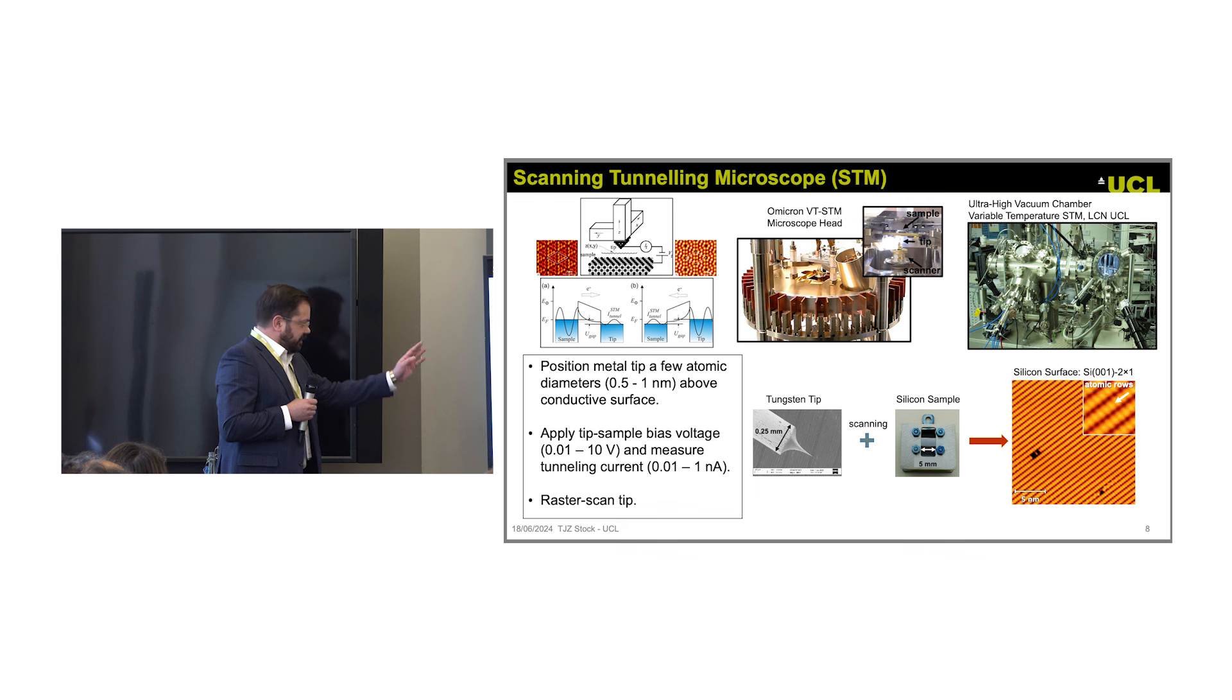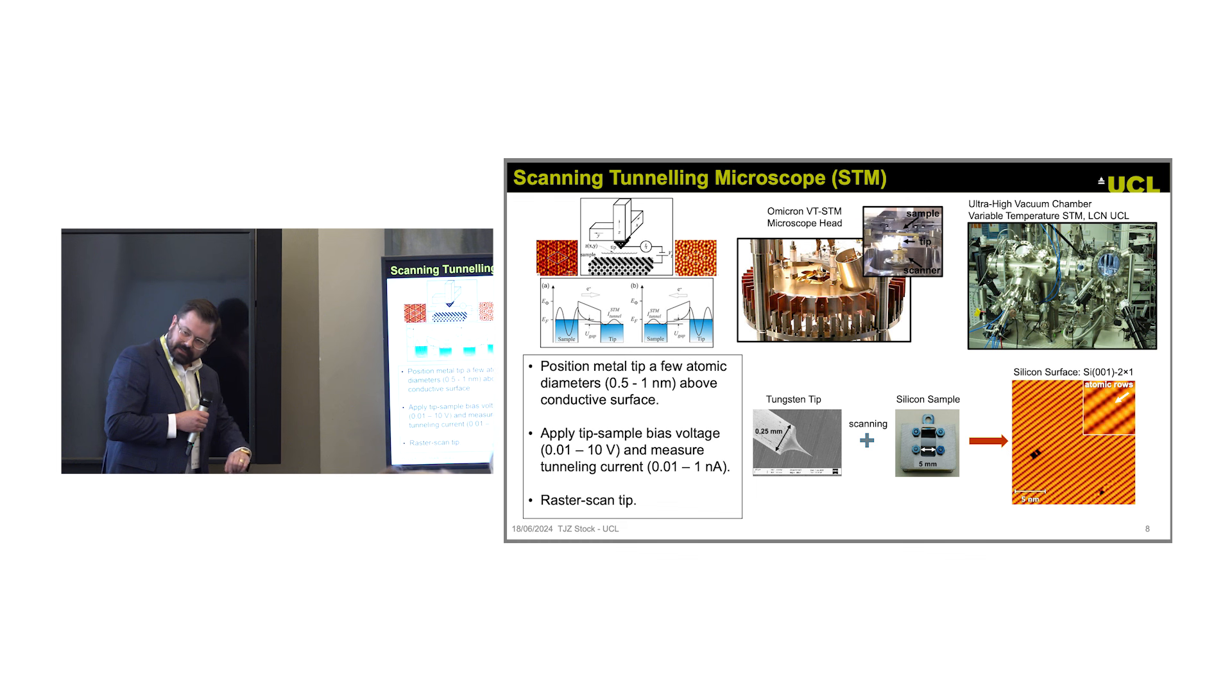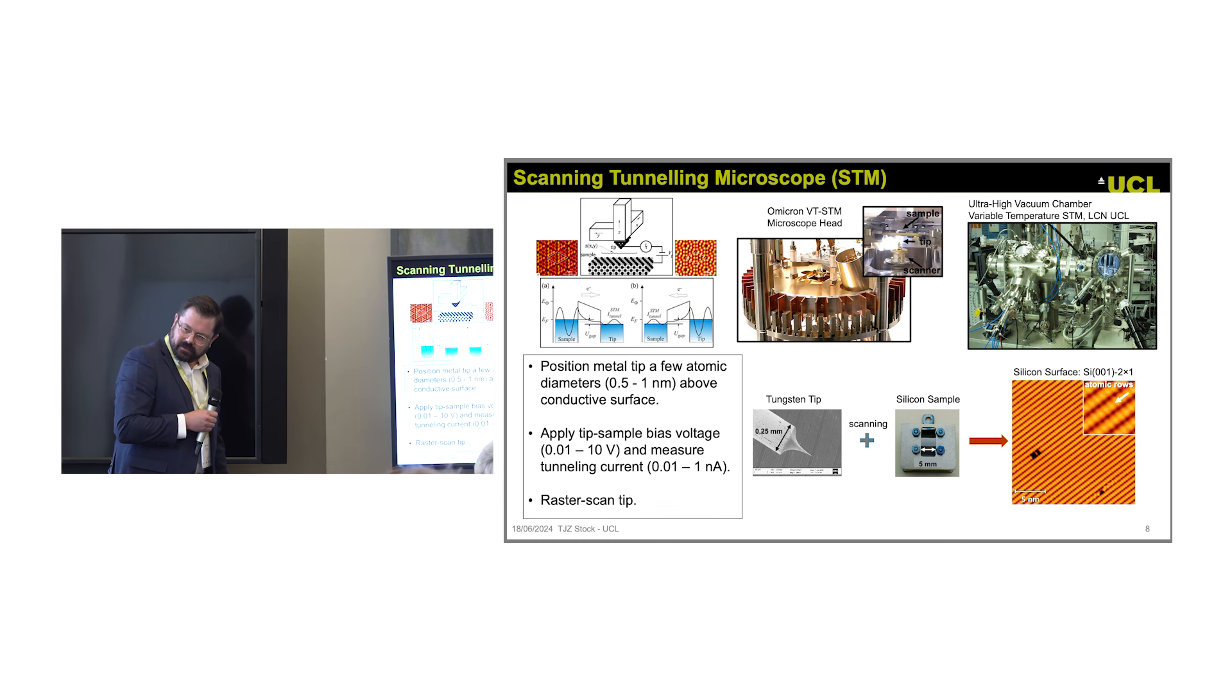Here are some details of how this works: tip, sample. Here's a nice, clean, perfect silicon surface, and it all goes in a stainless steel chamber at ultra-high vacuum. Put the tip next to the sample, raster it, measure where the electrons are using quantum tunneling.